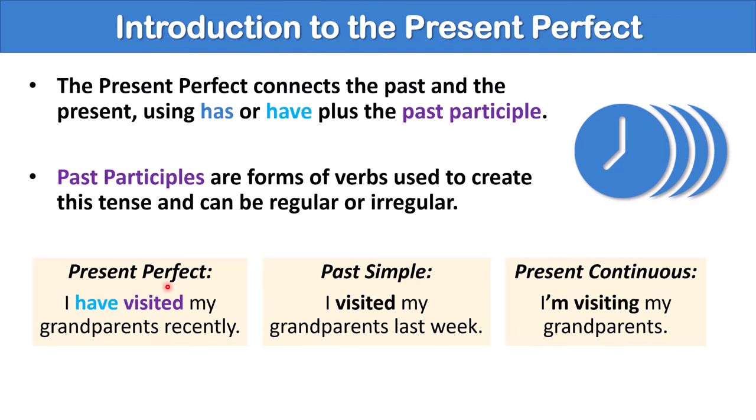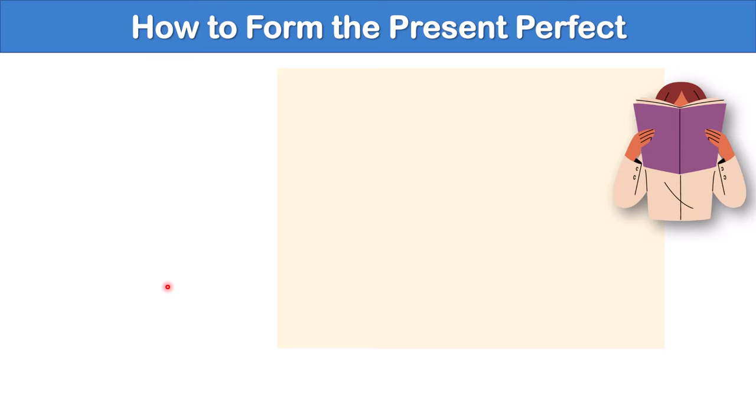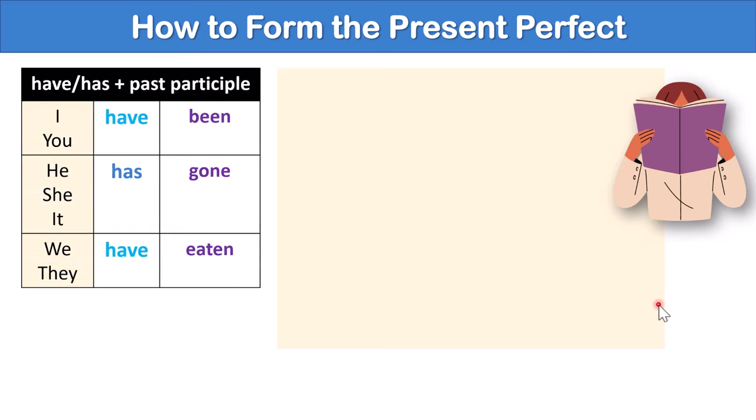The present perfect has many uses, and I'm going to go through them in detail. But first, let's talk about how we form the present perfect. First, let's talk about how to form the present perfect in the affirmative form. We begin with the subject, then have or has, and then the past participle.